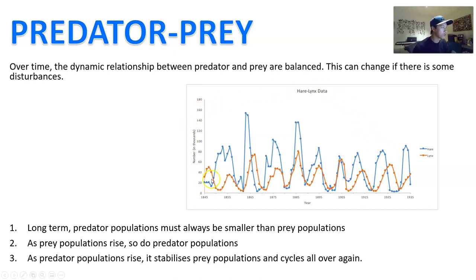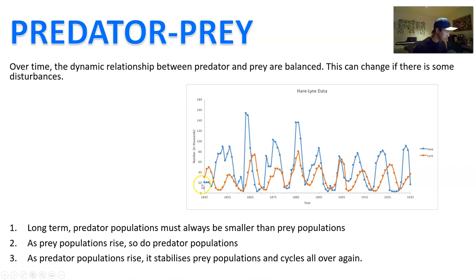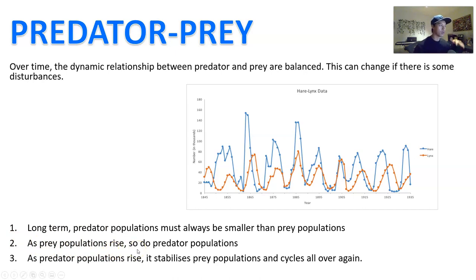This balance can change with some sort of disturbance — for example, introduced species can have a big effect. Here is the example of the hare and the lynx, the hare in blue and the lynx in orange. The predator population must always be smaller than prey populations — if it's too high and sustained, they'll eat all the prey. As prey populations rise, you should expect the predator population to rise to match that because there's more prey and it's easier to catch them. However, it should be cyclical: as predator populations rise, it stabilizes the prey population, and the cycle begins again.